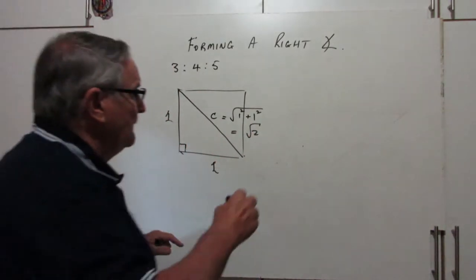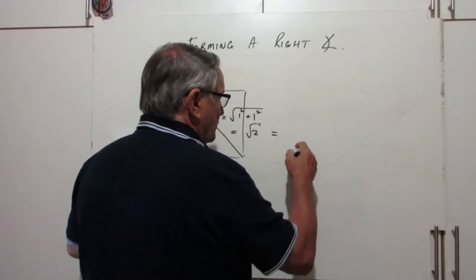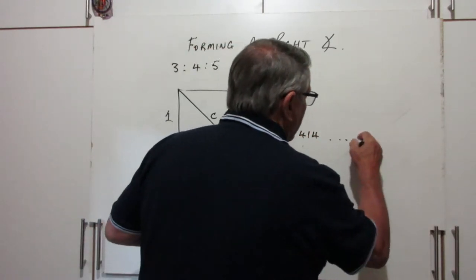Another irrational number. If we want this to 3 decimal places, it's 1.414, and it goes on forever.